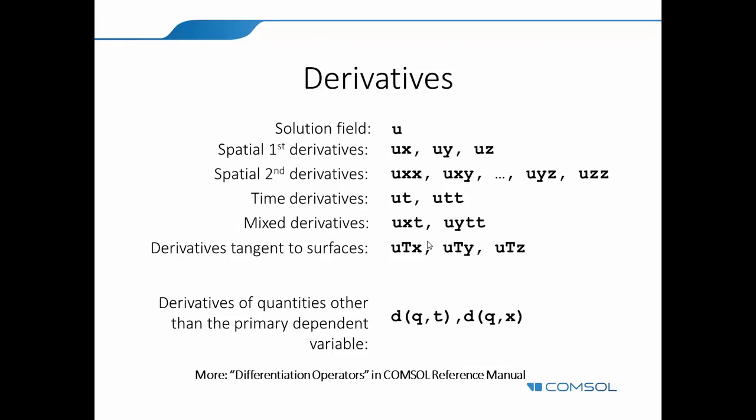So when you are working with this, then you need to sometimes access the derivatives of certain quantities. So here are some operators in COMSOL to give you derivatives. If the solution field was u, for example, then ux, uy, uz will give you spatial derivatives. And then adding them will give you a second derivative, mixed derivative. If you are on surfaces, we have this solution field uppercase T, special direction variable, which will give you a tangential derivative on boundaries.